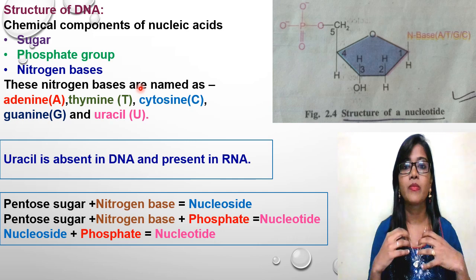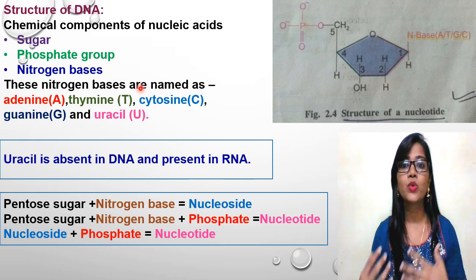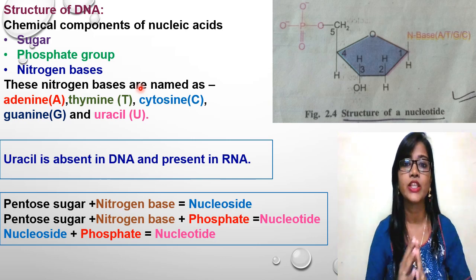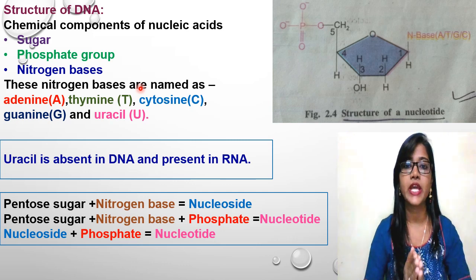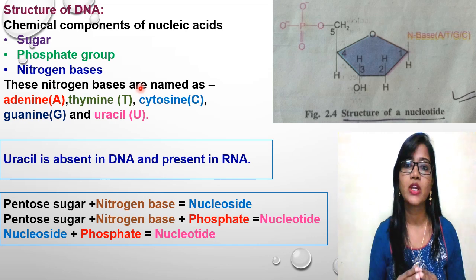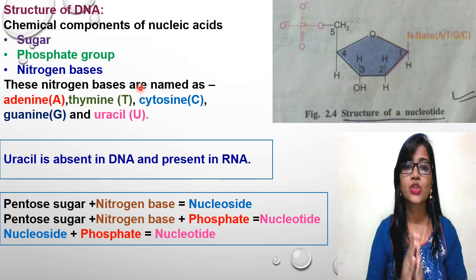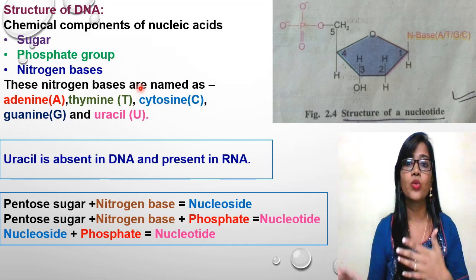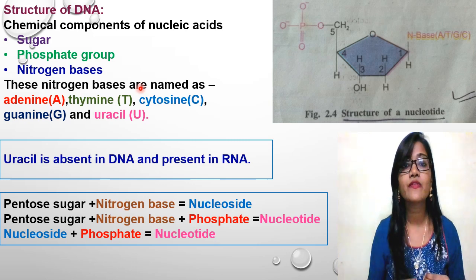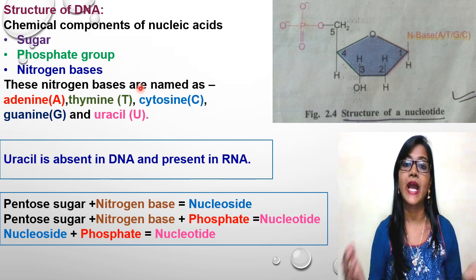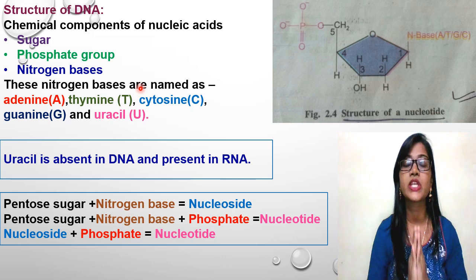Friedrich Miescher separated the cellular substance in 1869 from the nuclei of pus cells and termed it as nuclein. Subsequent studies showed that this material has acidic properties and hence it was renamed as nucleic acid. Because of that it is known as deoxyribose nucleic acid — DNA — and ribonucleic acid — RNA. These are the two major types of nucleic acids found present in cells.